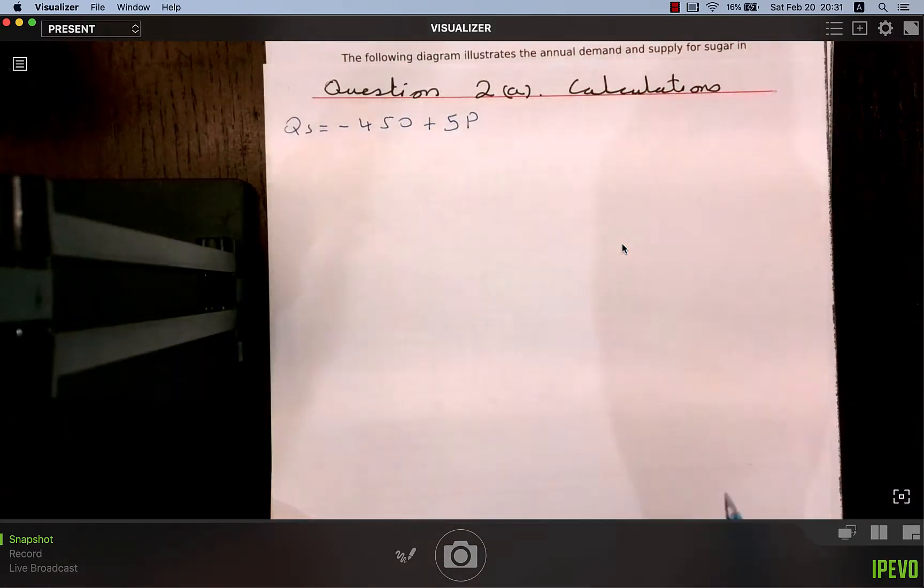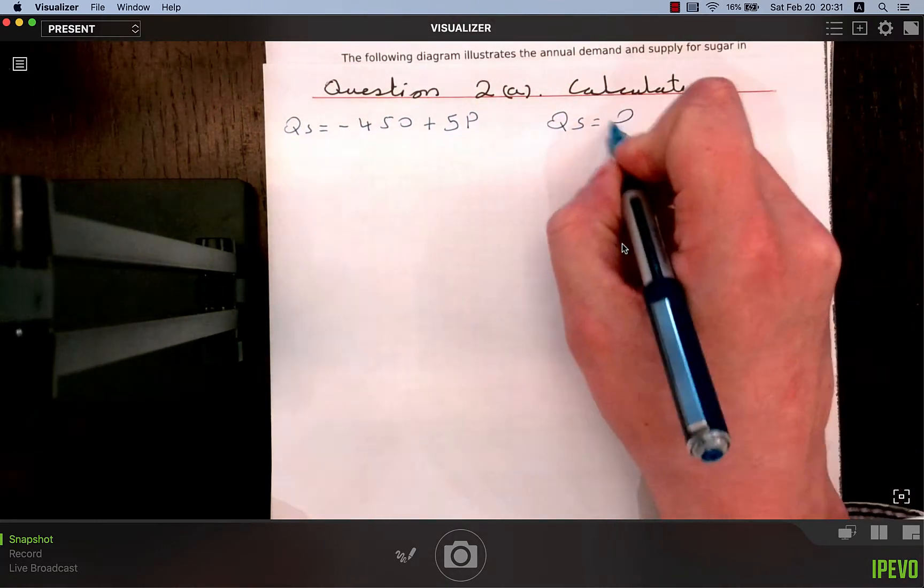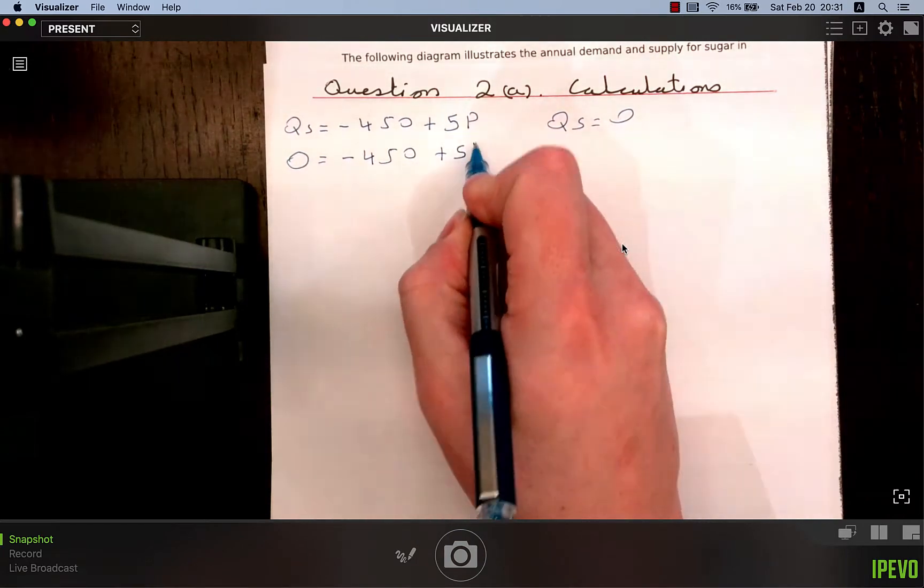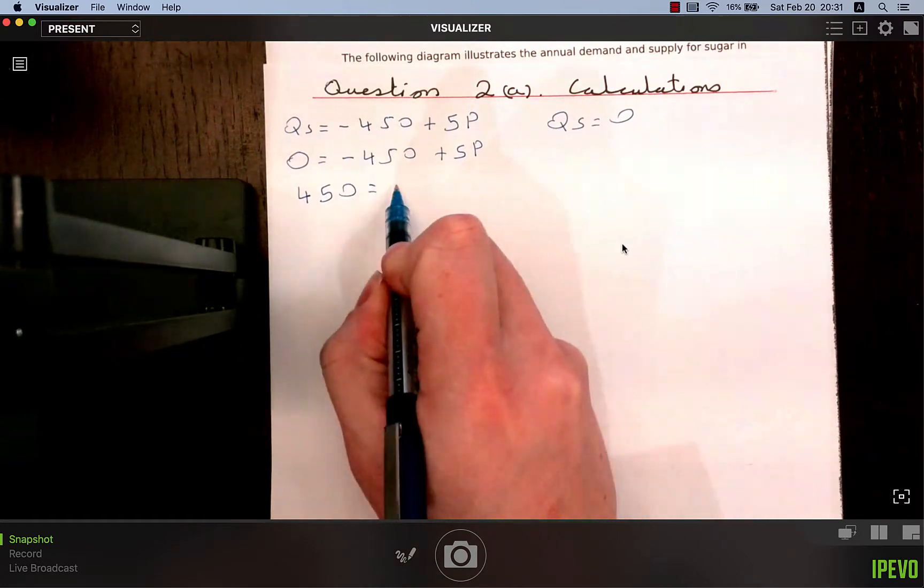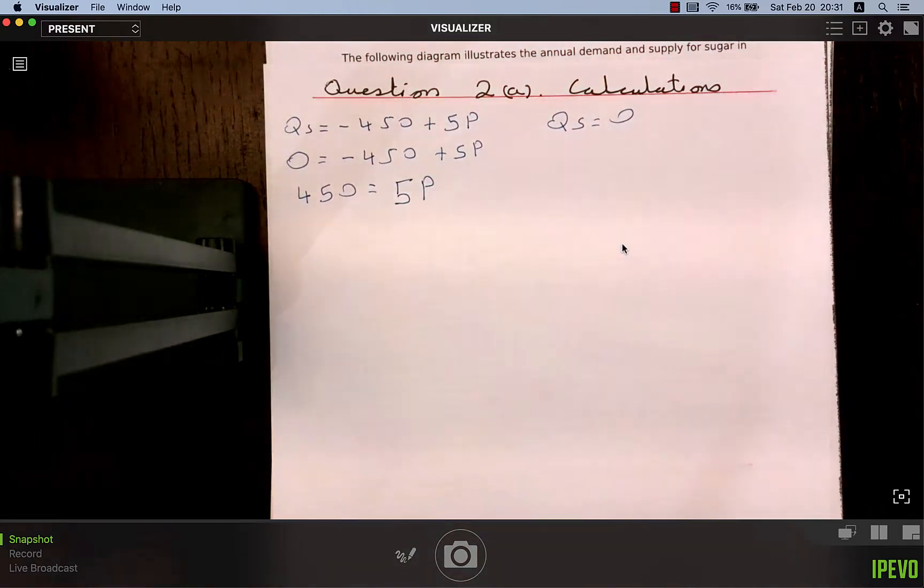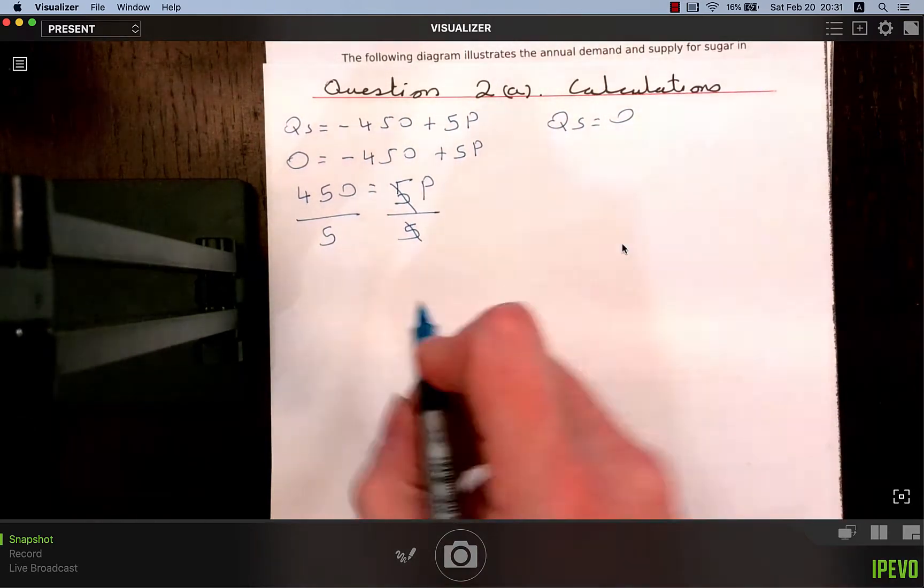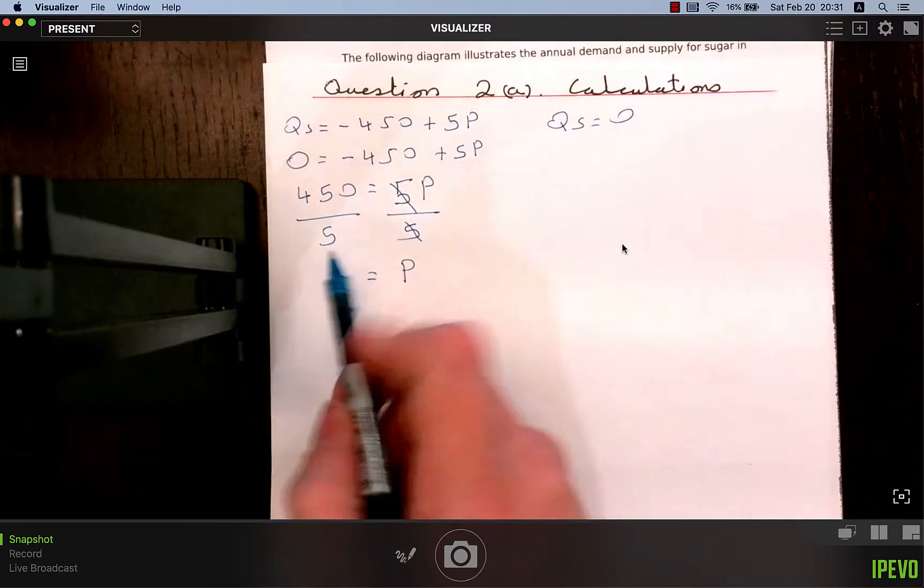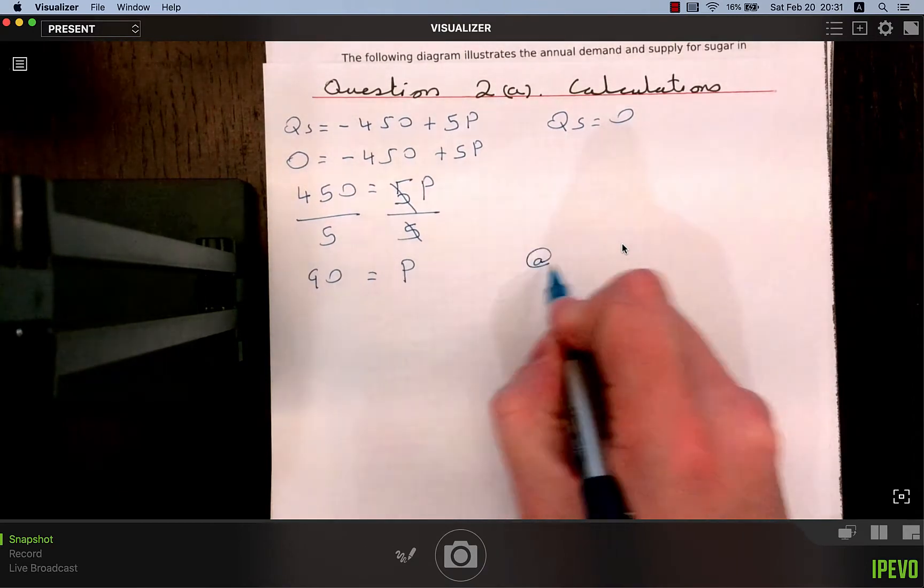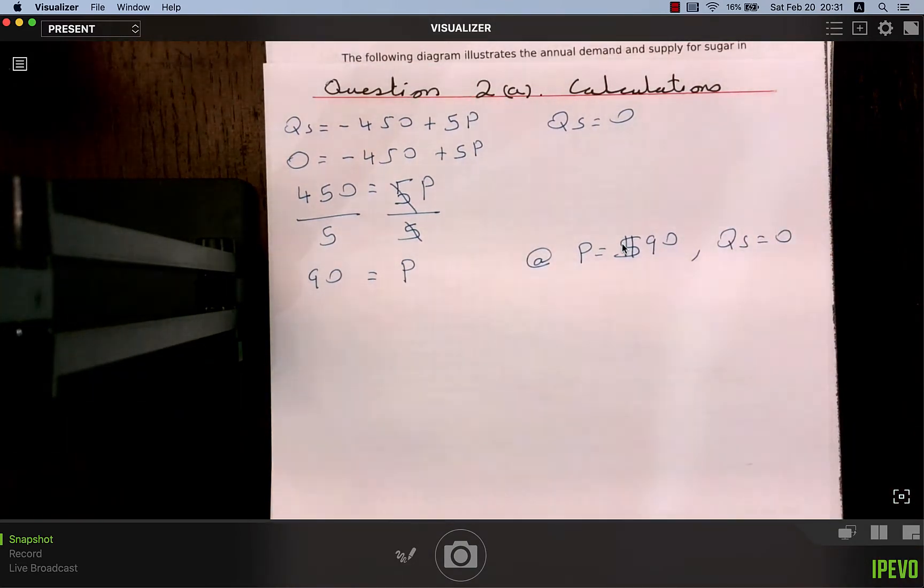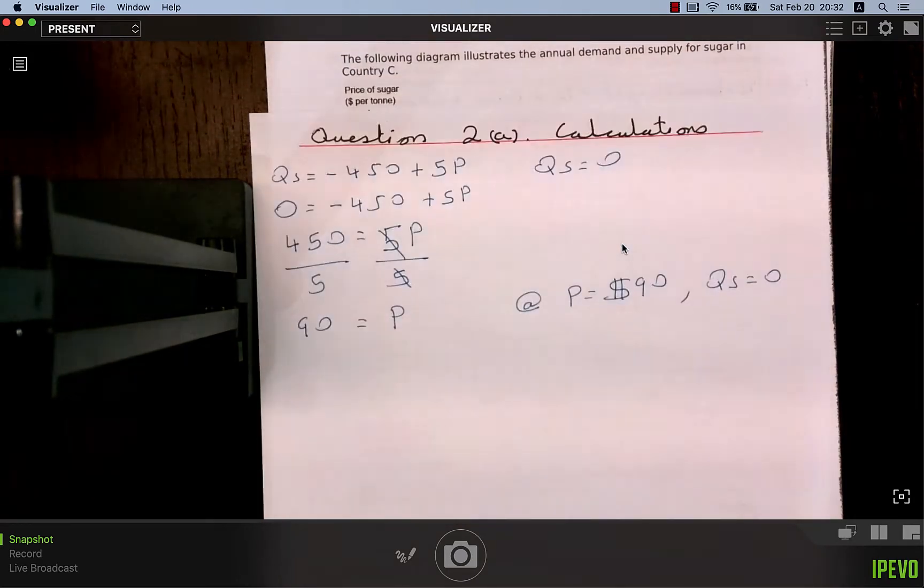That would mean that the supply curve shifts upwards by $10 for every single good that's produced. But because we can see that this supply curve is perfectly inelastic, a vertical straight line, that means that the suppliers, the producers of the good will be the ones paying all the tax.